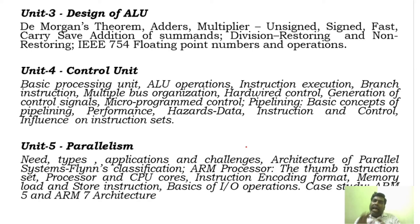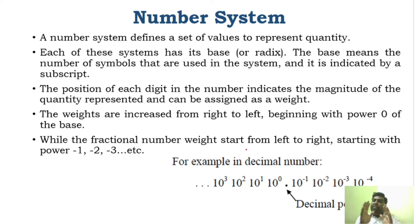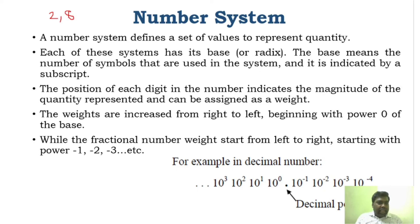We will start with a basic introduction about number systems. A number system is a set of values used to represent any quantity, and each number system has its own base. If you take binary, it is base 2; if it is octal, it is base 8; if it is decimal, it is base 10; and if it is hexadecimal, it is base 16.